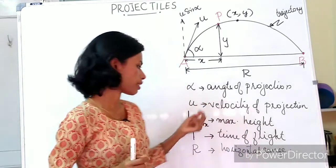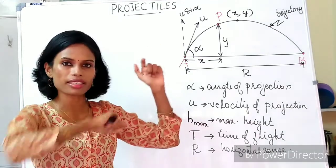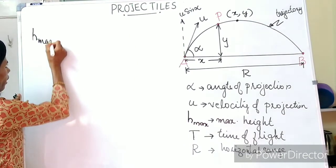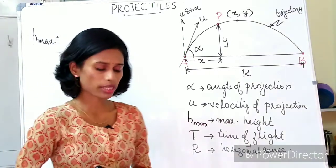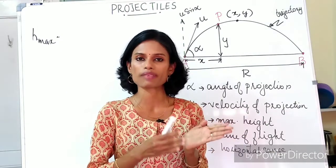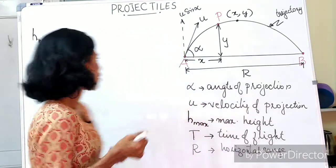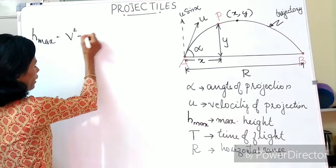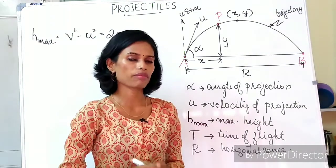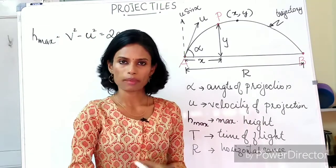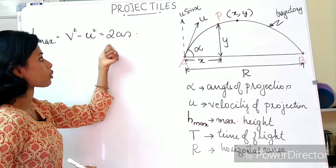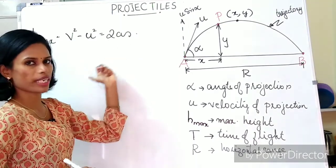Let's start with maximum height. To find the maximum height, we use an equation from linear motion: V² = U² + 2AS. When the particle reaches the peak of the trajectory, there is no vertical velocity — the vertical component of velocity becomes 0. The initial vertical component is U sin alpha, the final vertical component at the peak is 0, and the acceleration A is minus g because the particle is travelling against gravity.